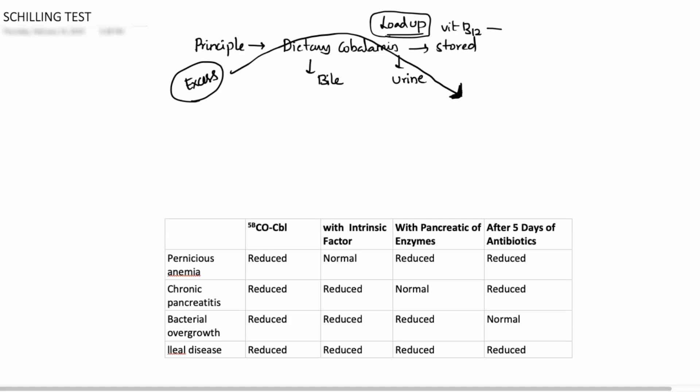To load up the body with excess vitamin B12, what we are doing in the procedure of Schilling, we are giving IM or intramuscular vitamin B12 injection 1 mg. So this will load up the body so that whatever oral radioactive cobalamin we are giving is now excreted through the urine. So what you have to do, you have to collect the urine for the next 24 hours of this experiment and try to measure the radioactive cobalamin present inside the urine sample.